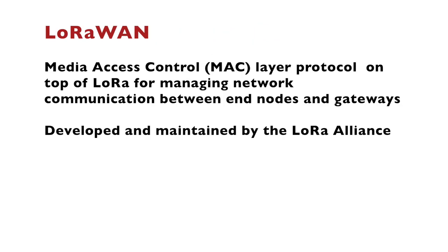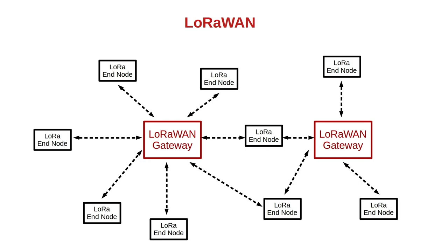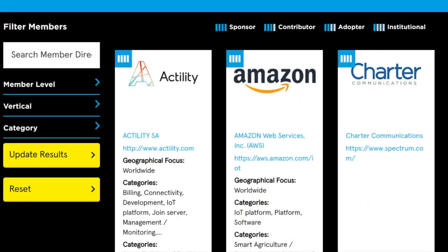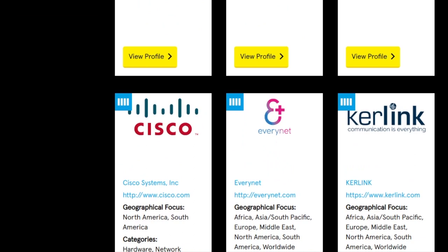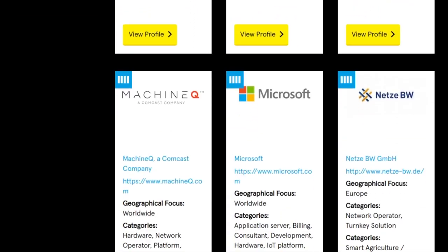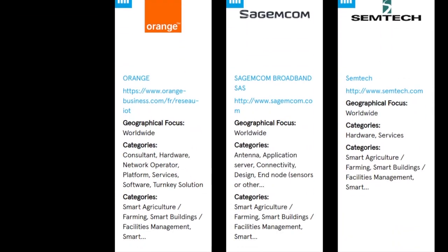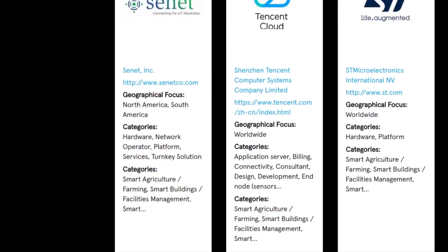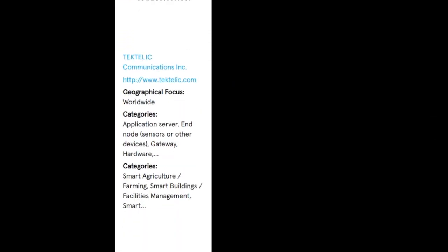LoRaWAN is a media access control layer protocol on top of LoRa for managing network communication between end nodes and a gateway. Using multiple gateways in different locations, the LoRaWAN network can become enormous. A real-life example is the Things Network. LoRaWAN has been developed and maintained by the LoRa Alliance, and many companies are members, including some well-known brands in the industry and Semtech, the company that created LoRa.